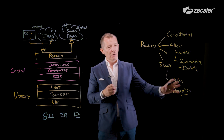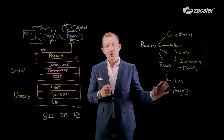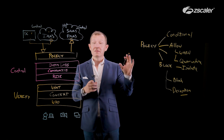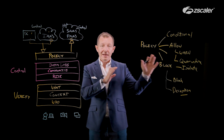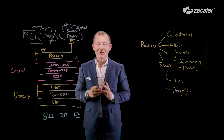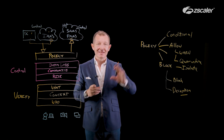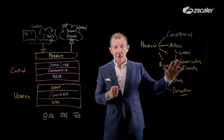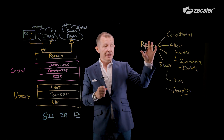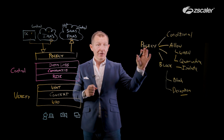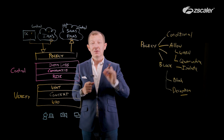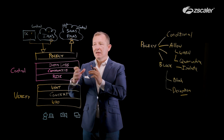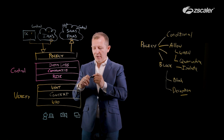So this policy control, as I mentioned at the beginning, is not a simple allow or block — it's much more. The goal of this policy is not only to say we need to enable access, but also to determine how to get access.